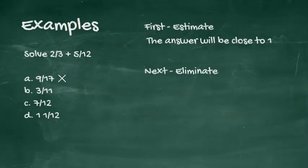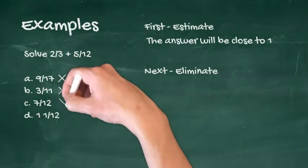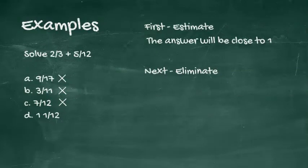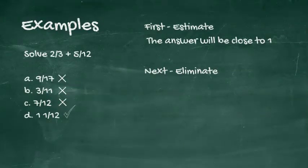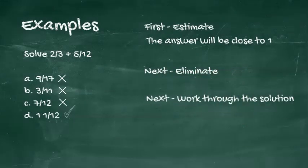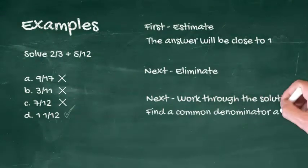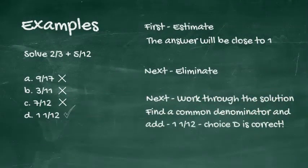Choice A is about one-half and can be eliminated. Choice B is very small, less than one-half and can be eliminated. Choice C is close to one-half and can be eliminated, leaving only choice D, which is just over one. Work through the solution, find a common denominator, and add. The correct answer is one and one-twelfth, so choice D is correct.